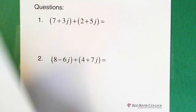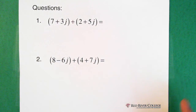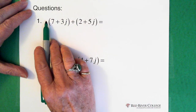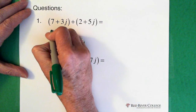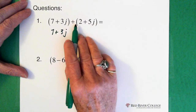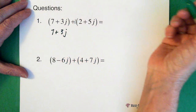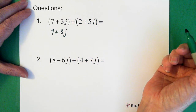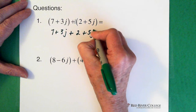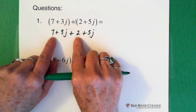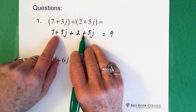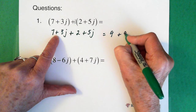So that's what we're going to be doing in this video. Question 1: we have 7 plus 3j added to 2 plus 5j. We have a positive in front of this bracket, so we can just drop the bracket — essentially a plus 1 in front, multiplying through using the distributive principle. So we end up with 7 plus 3j plus 2 plus 5j. We add our real numbers, 7 and 2, which gives us 9. And we take plus 3j and add it to plus 5j to get plus 8j.